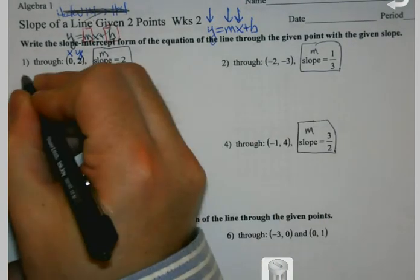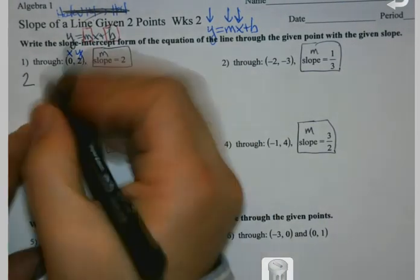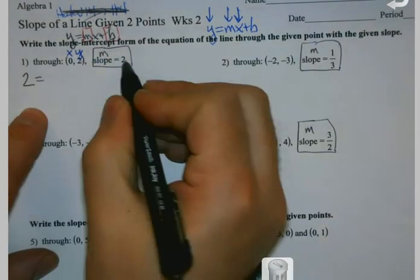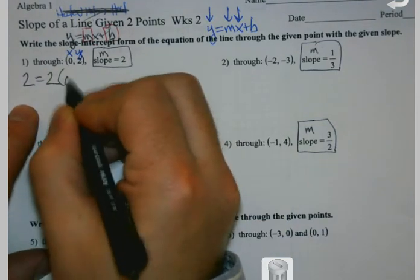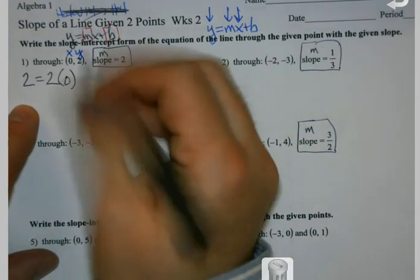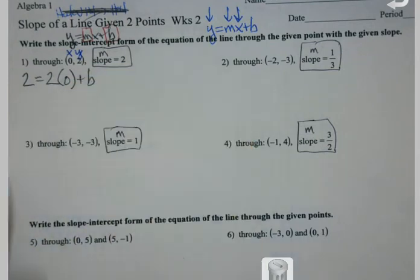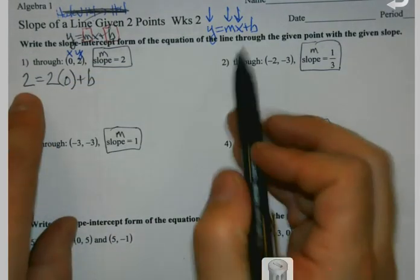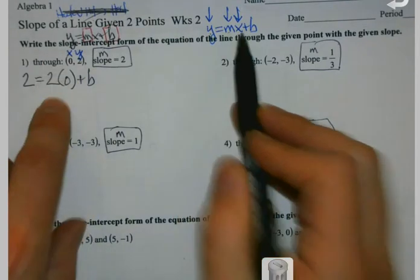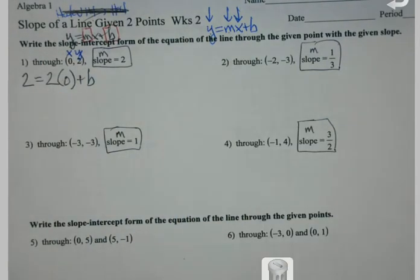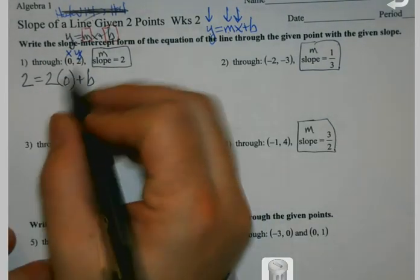So I plug in the y value for my coordinate point in for y equals my m is 2. My x is 0. Okay, so all I've done is I've plugged in y and m. Yeah, this is like what we were doing the first couple days this week. We're doing a little review here.